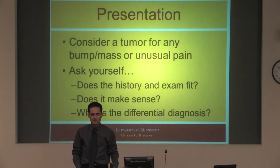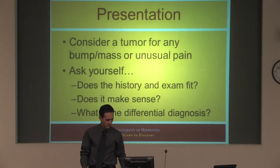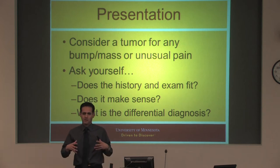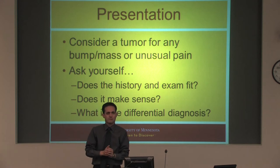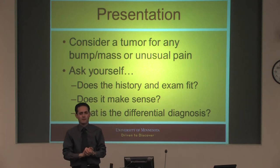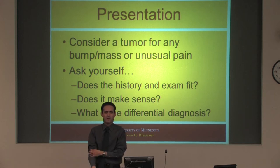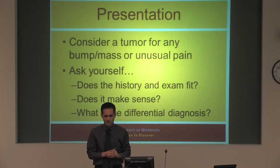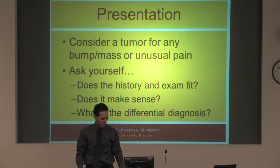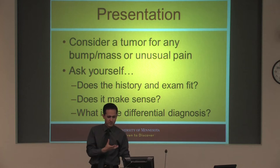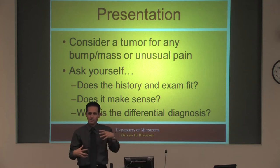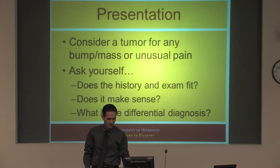You really need to consider a soft tissue tumor for any kind of bump, mass, or unusual pain that someone has. I'm really big on differential diagnosis. It's really tempting sometimes to say, well, it doesn't look like much, I'm sure it'll be okay — but then I think, what was your list of possibilities? It's really easy to let that go. So try not to yield to that temptation. Do things all fit together nicely? Does the history and exam fit together? Does it make sense?